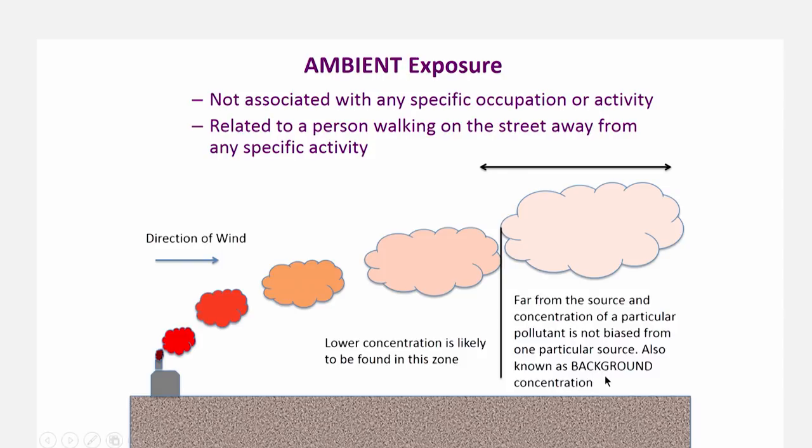Ambient exposure, on the other hand, is not associated with any specific activity. Anybody walking on a street, not involved in any particular activity, is exposed to what we call ambient concentration, also known as background concentration. Our focus as a society is to maintain concentrations of chemicals below a certain level in the ambient zone. Background concentration is specifically not related to any activity. This background concentration can increase over time if the amount of pollution released keeps increasing — similar to the background concentration of CO2 in the atmosphere, which we discuss in terms of greenhouse gases and global warming, an average concentration across a very large region that is increasing.